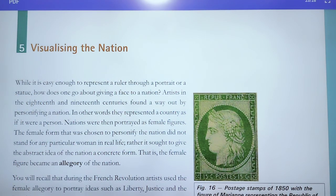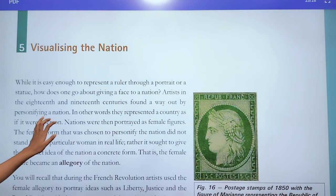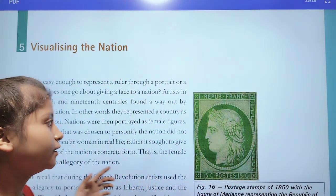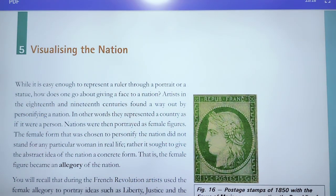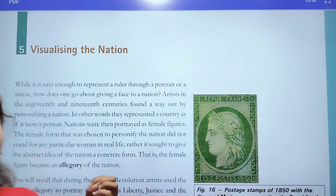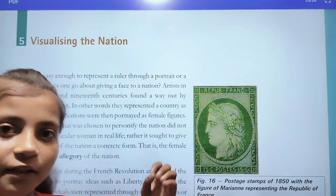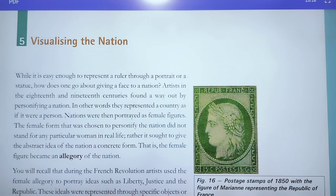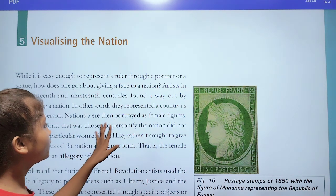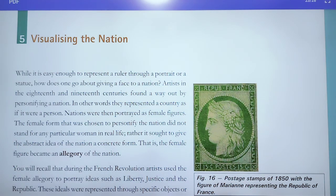Artists in the 18th and 19th centuries found a way out by personifying a nation. They represented a country as if it were a person. In France there is also an allegory called Marianne, and in Germany there is Germania.